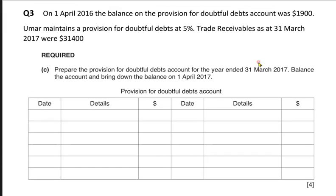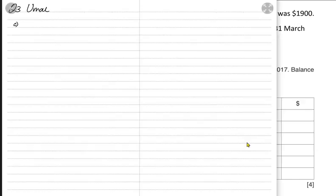In question number three, on 1st April — that is the start of the year — the balance on the provision account is given as 1,900. We need to make a provision account. As you may be aware by this time, provision is always credit in nature because it is a contra asset, so balance brought down always comes on the credit side.